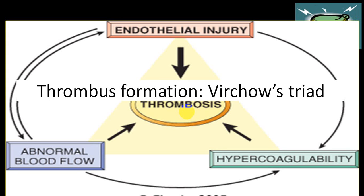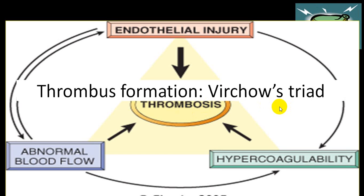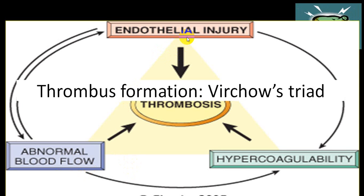In an artery, embolism moves away from the heart; in a vein, towards the heart. The etiology for thrombus formation — Virchow's triad — applies to arteries, veins, and cardiac chambers alike: endothelial injury, hypercoagulability, or abnormal blood flow and stasis. These three mechanisms hold true for all three most common sites — arterial, venous, and cardiac.